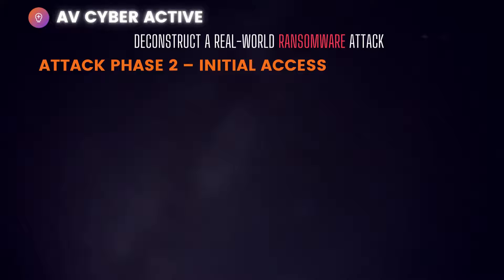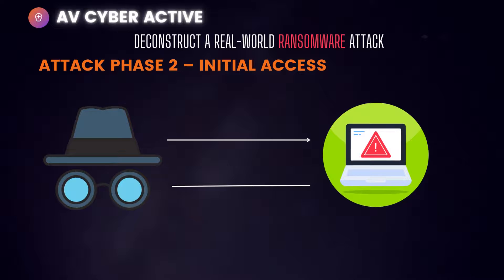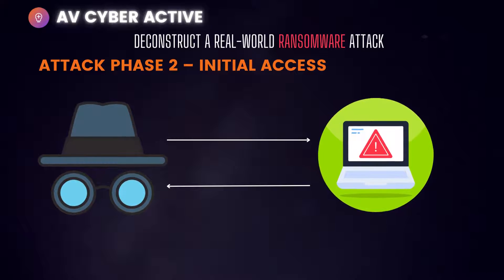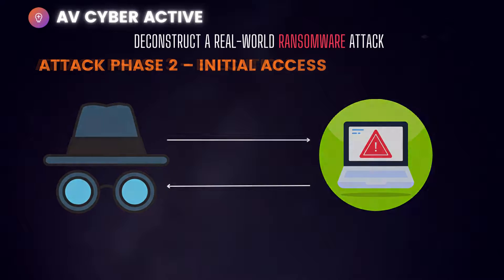Phase two is Initial Access. Threat actors will try to navigate and better understand the organization's internal infrastructure. After running advanced data and recon reports and exfiltrating necessary information, the attackers then try to remove traces of their activity to avoid discovery.